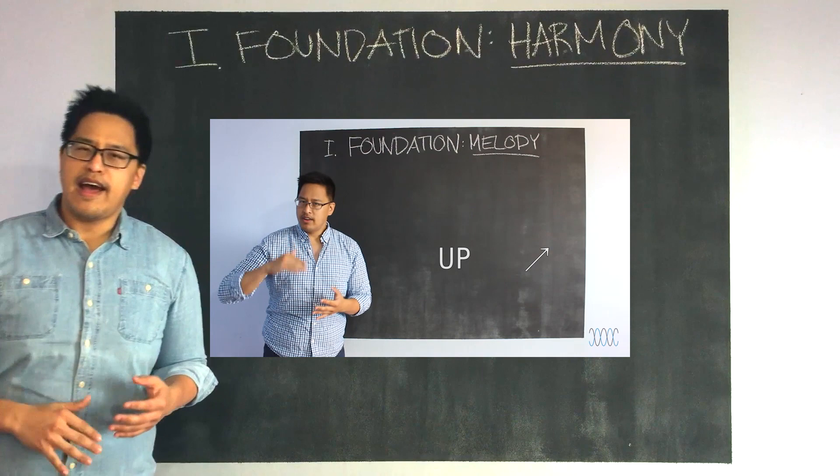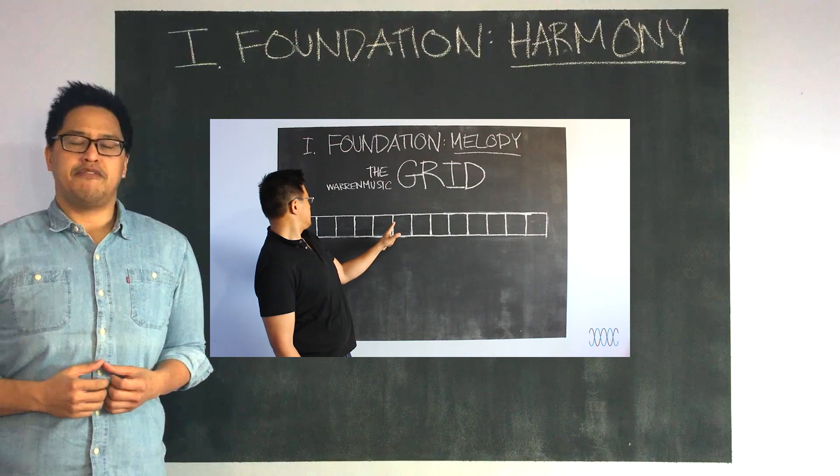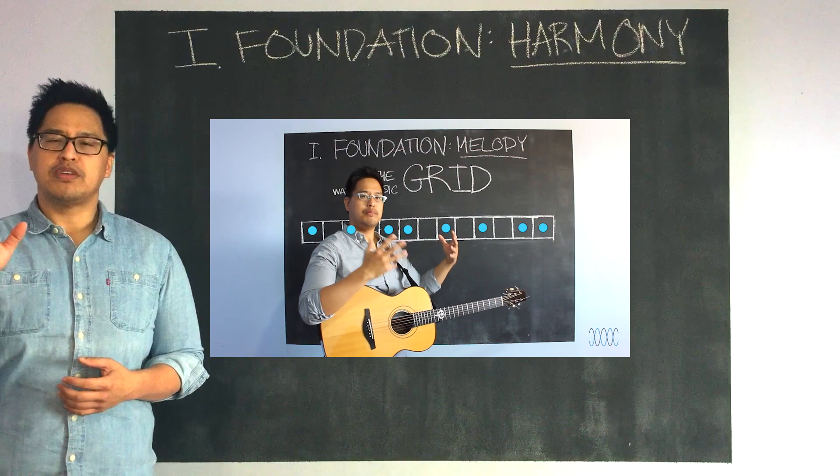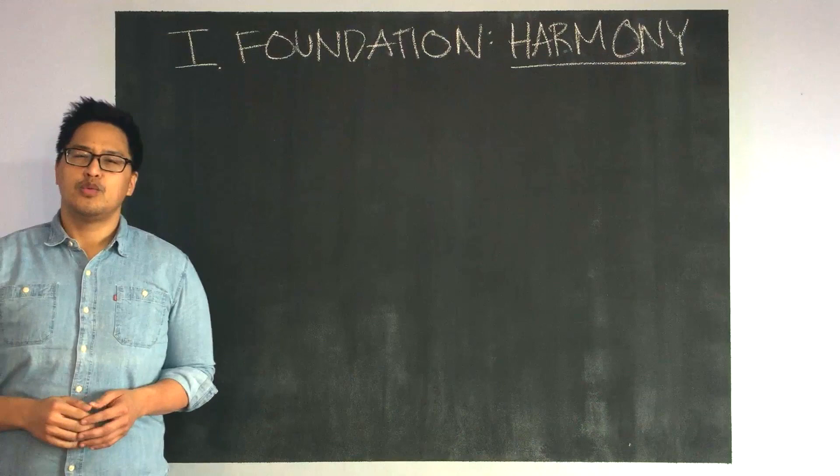It moves up, down, or stays the same. We've gotten to know how melodic motion can be defined by half steps on a grid, and how the major scale helps us translate raw sound into tangible scale degrees.